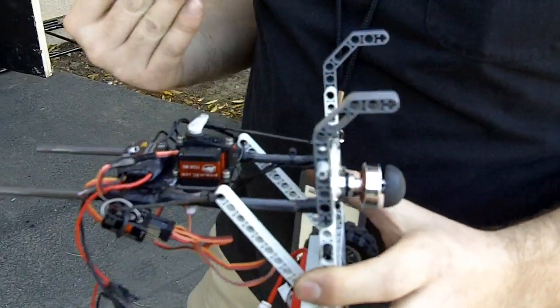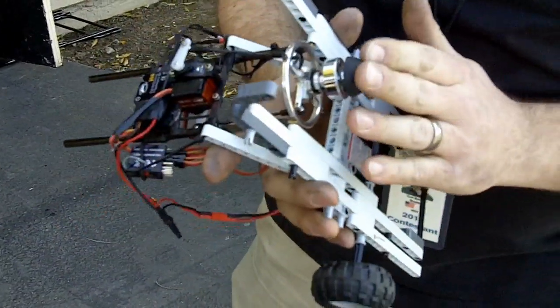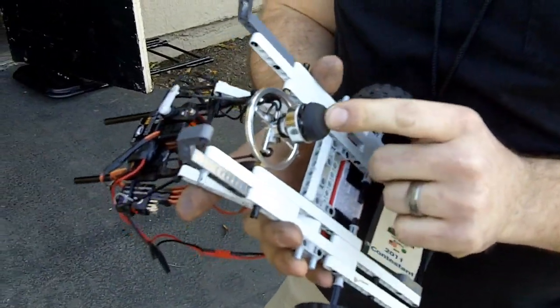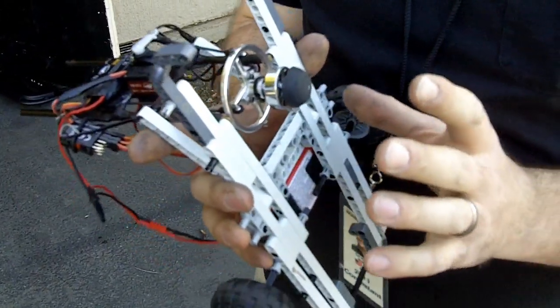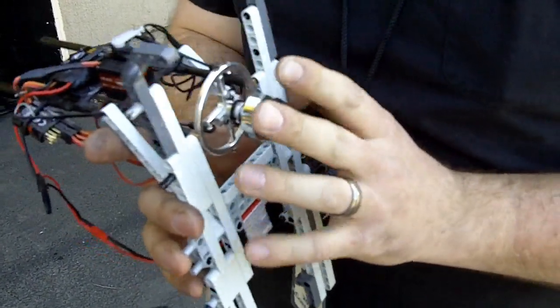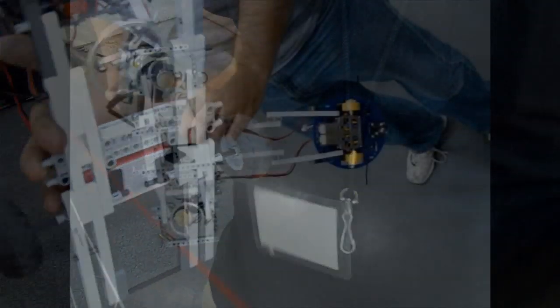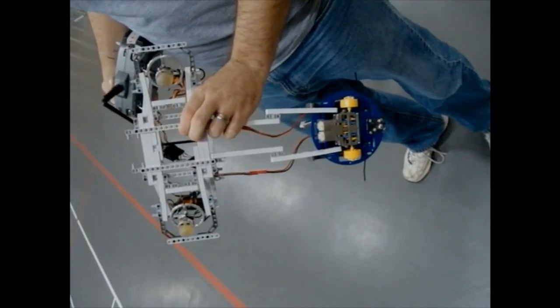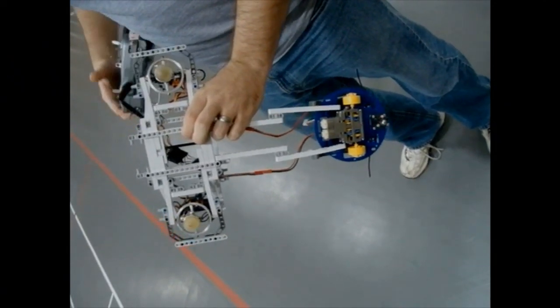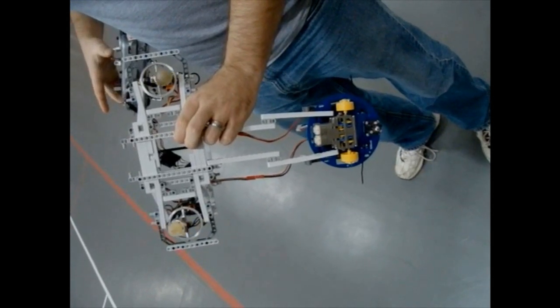So our next version has two of these on it. And since each one of these can vector your traction force in any direction, if you have two of them or more, it makes you completely omnidirectional. So that's forward, that's reverse, that's turn left, that's turn right, and this is strafe left and that's strafe right.